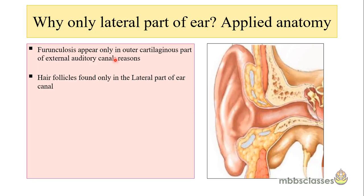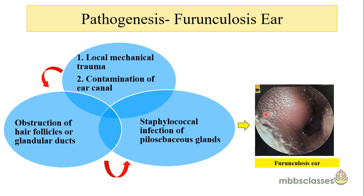The question is: why does furunculosis of the ear affect only the lateral part? The reason is that hair follicles are found only in this lateral part of the external auditory canal. In this lateral part, we also get sebaceous glands. In the bony part, there are no hair follicles and no sebaceous glands. That is why furunculosis is a disease found only in the lateral part of the external auditory canal.